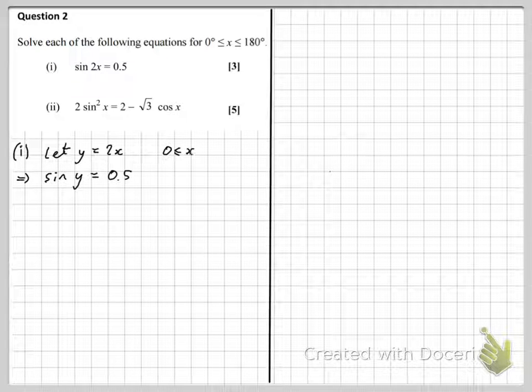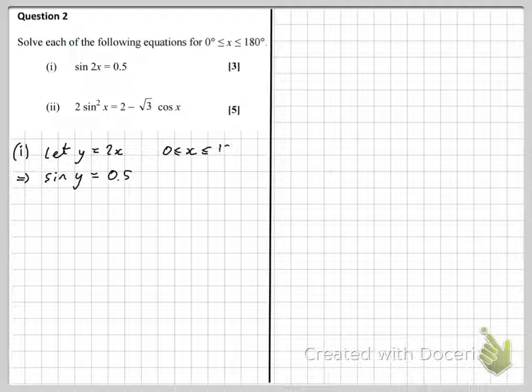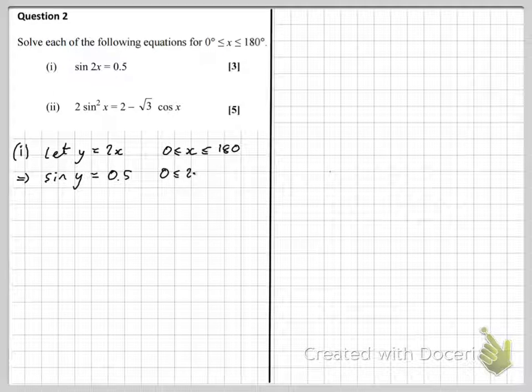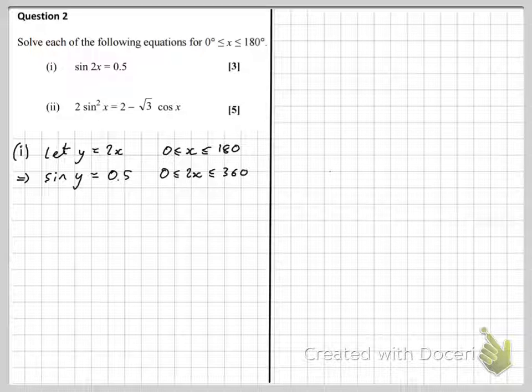But we just need to pay attention to the range. So from the question, the angle x has to be between 0 and 180. But we're interested in 2x. So doubling all three parts of that inequality, we get that 2x has to be between 0 and 360. But 2x is just y, isn't it?